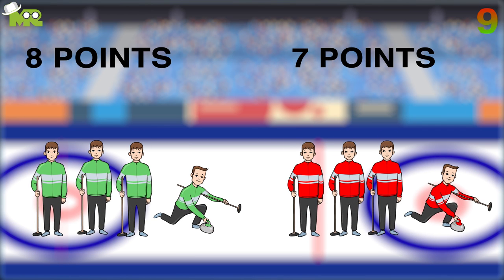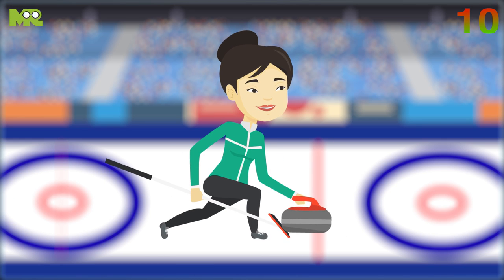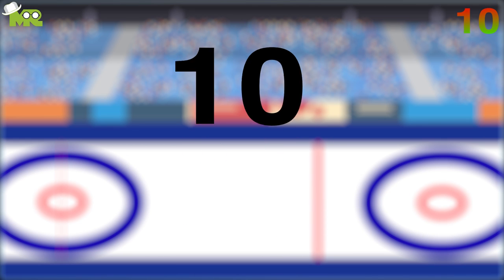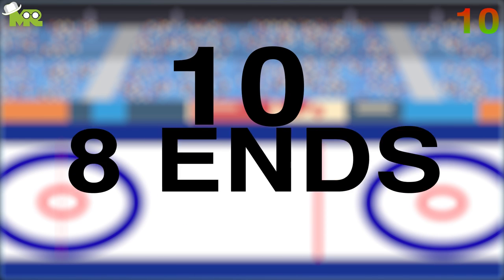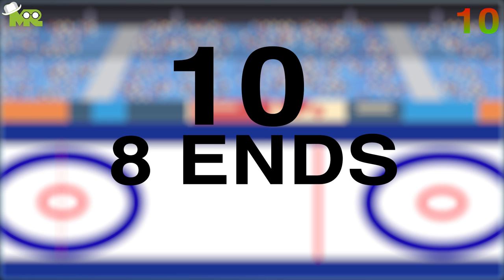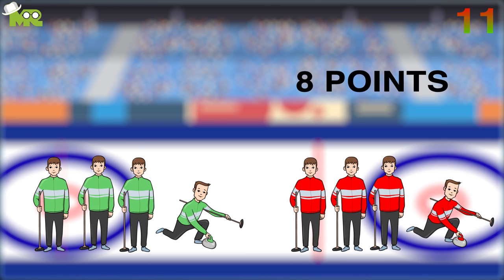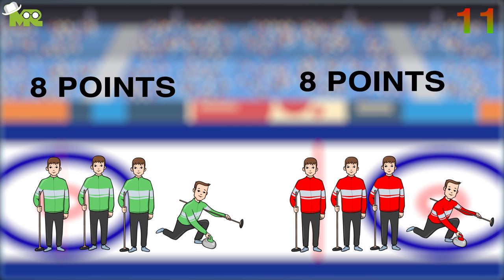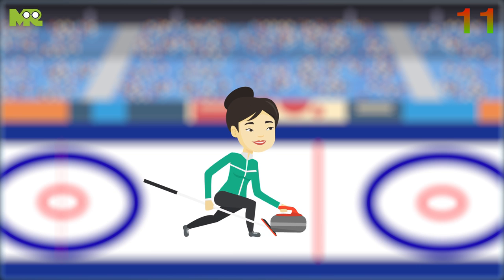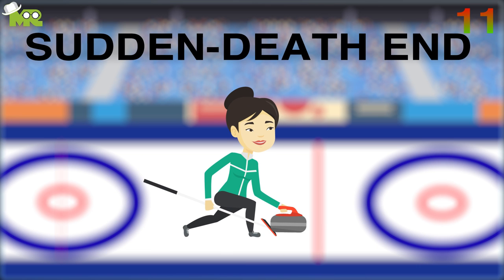The team with the most points after all the ends wins the game. Almost all curling matches consist of 10, or sometimes 8, ends. In case the scores are level after the allotted number of ends, an extra sudden death end is played.